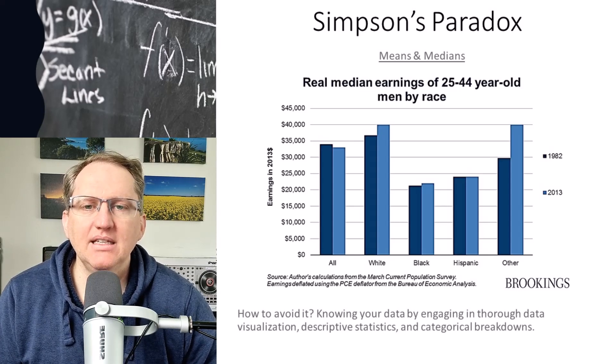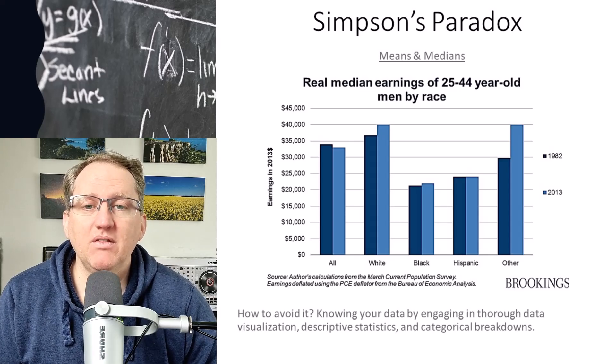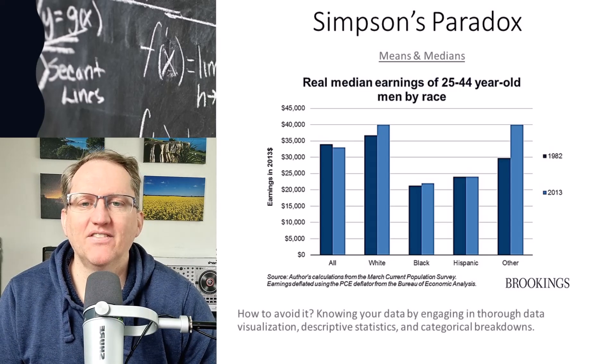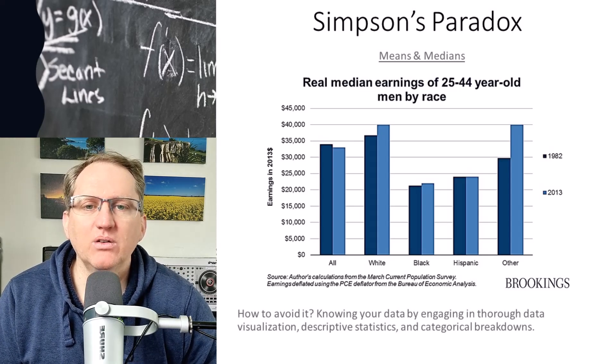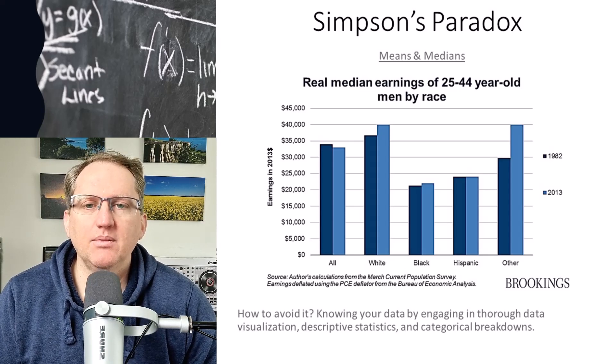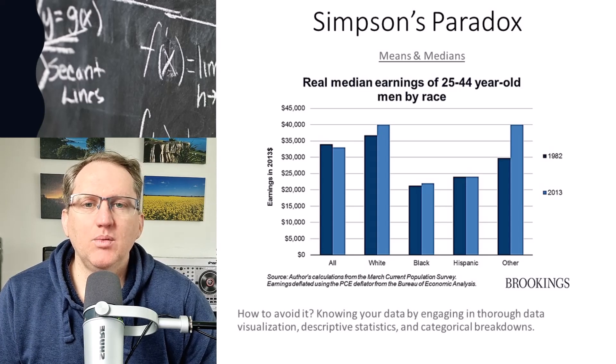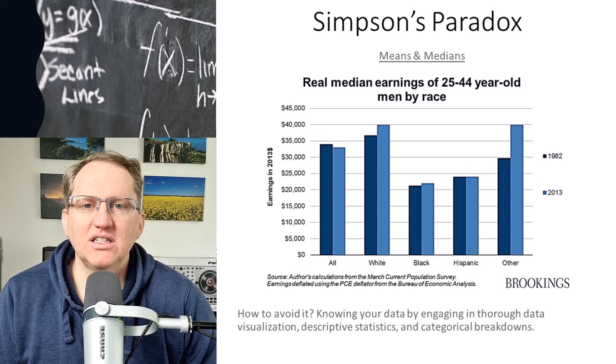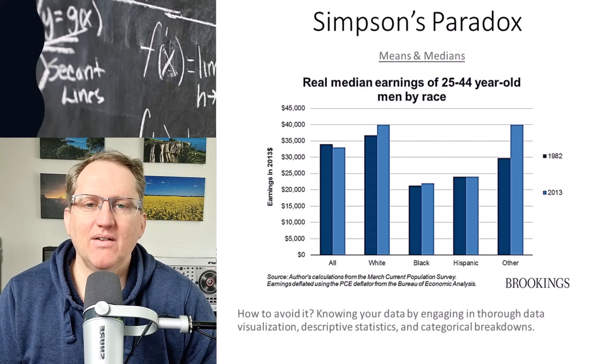Anytime we're looking at means, particularly for overall measures, we need to be thinking really carefully about what variables might actually be influencing a pattern in a different direction from what we have. The way that we avoid Simpson's paradox firstly is by being aware of it. And once we're aware of it, by doing a lot of data visualization and also just looking at our numerical measures, our descriptive statistics, thinking about our data and just exploring it really thoroughly. That way we should be able to spot when we have these patterns that are going in the opposite direction.